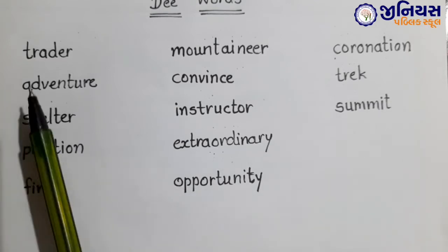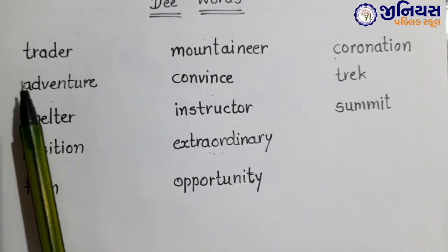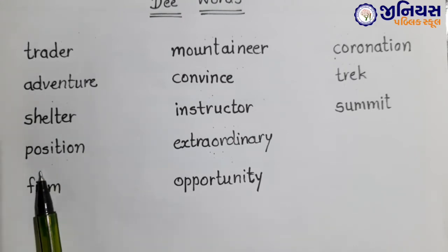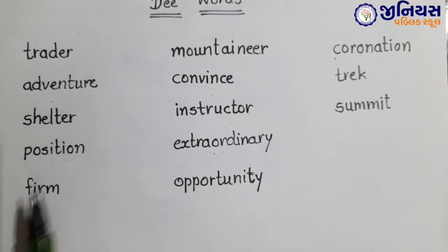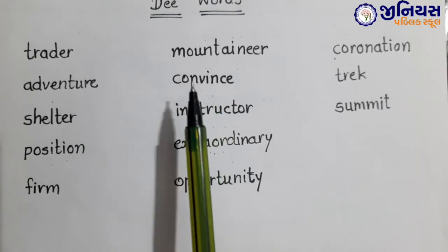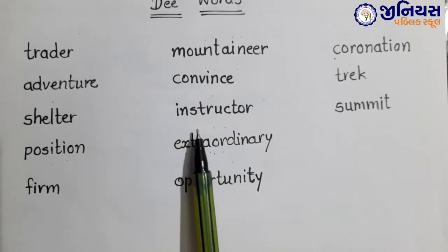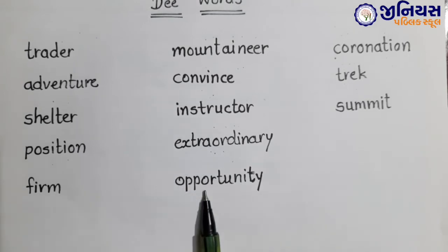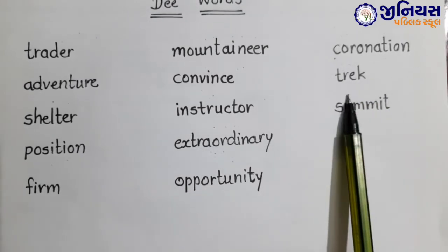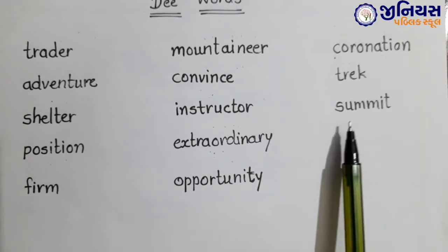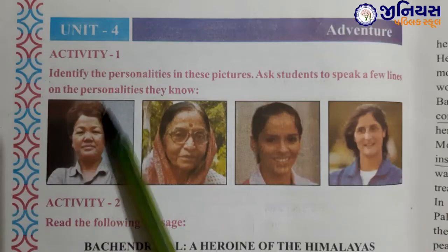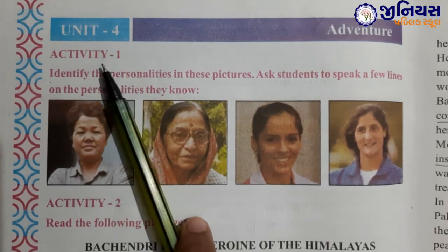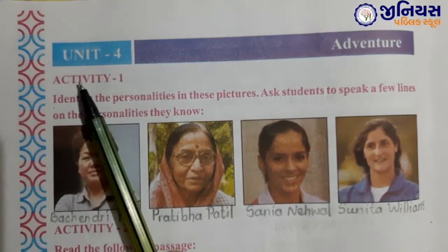Let's repeat this: trader, adventure, shelter, position, form, mountaineer, convince, instructor, extraordinary, opportunity, coronation, trek, and the last one is summit. So students, we had learned the D-words of this unit. Let's learn the unit from the textbook.